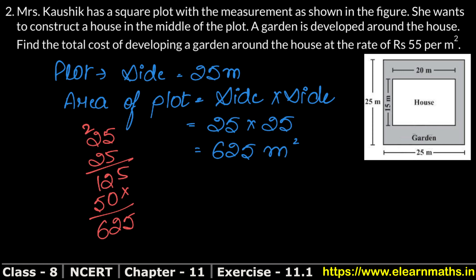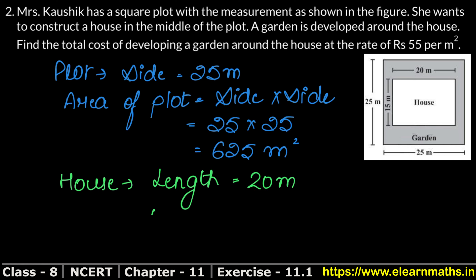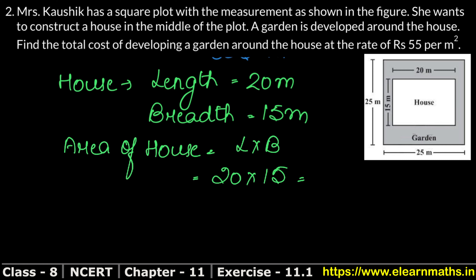Now we will calculate the house area. The house is rectangular in form. The length of the house is 20 meters and the breadth is 15 meters. The area of the house is length × breadth, so it is 20 × 15 = 300 square meters.